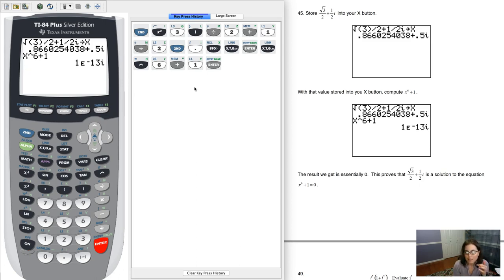And the i there isn't going to affect whether it's 0 or not, because whether 0 is a real number or you have 0i, it's still 0. So essentially, X to the sixth plus 1 is 0. And that's how you would get that to work out on your calculator.